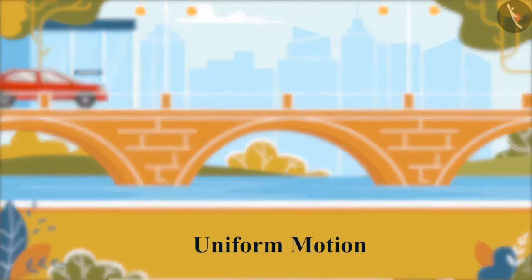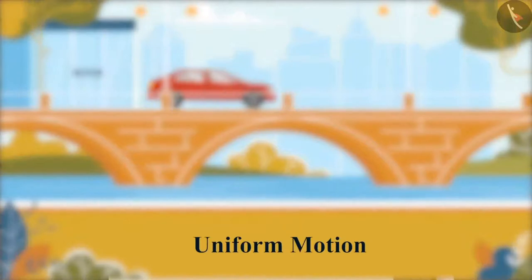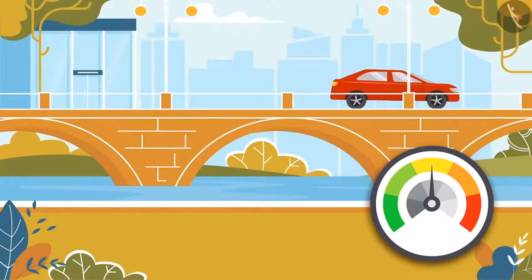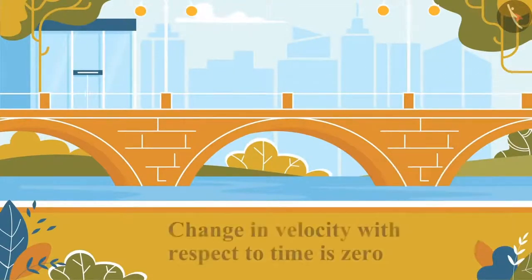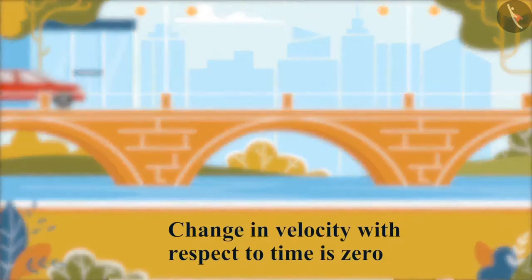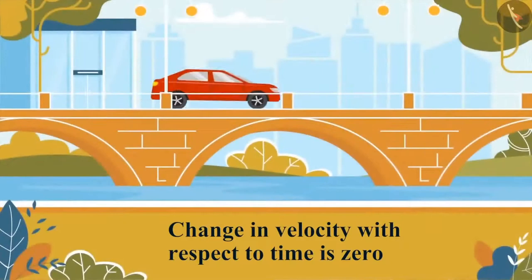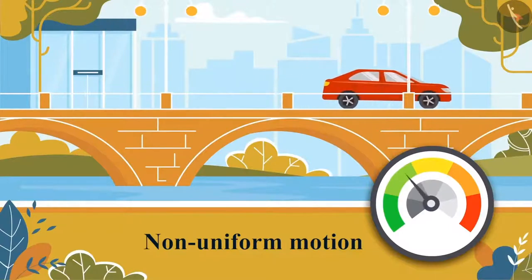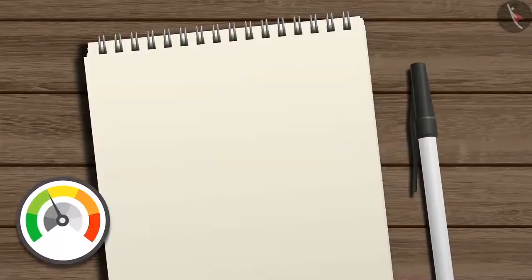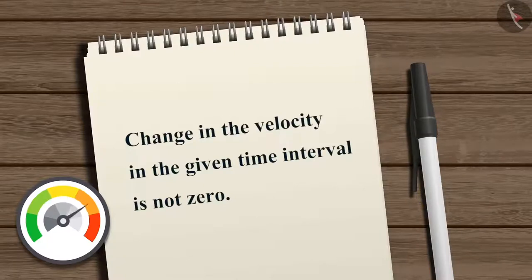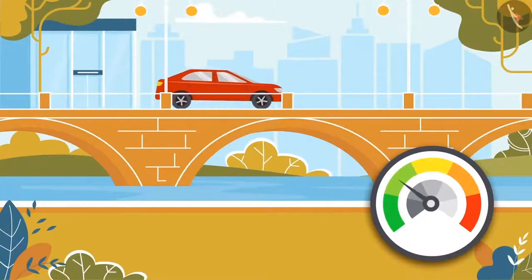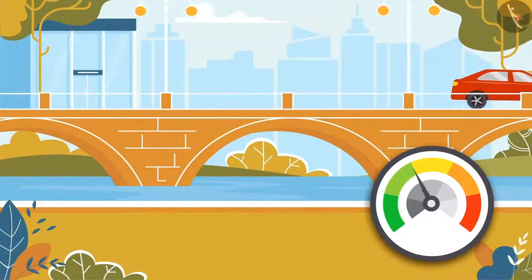Now consider if the motion of the car is non-uniform, so its velocity varies with time — thus the change in velocity in the given time interval is not zero. To represent this rate of change of velocity, another physical quantity is introduced, known as acceleration.